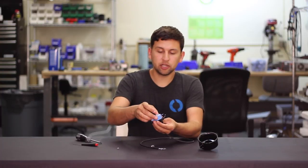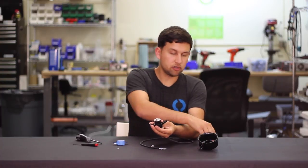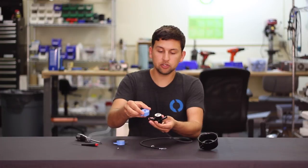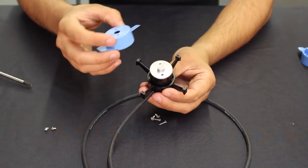Once the screws are out the propeller lifts right off and you can replace it with the new propeller, making sure that the two screw holes on top line up with the two holes on the rotor.